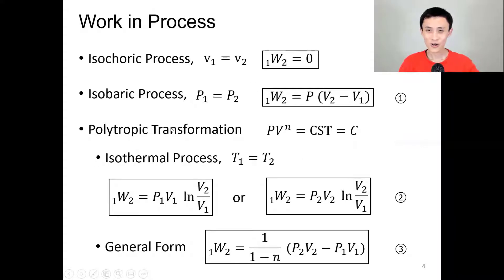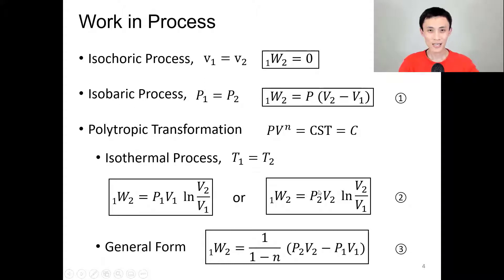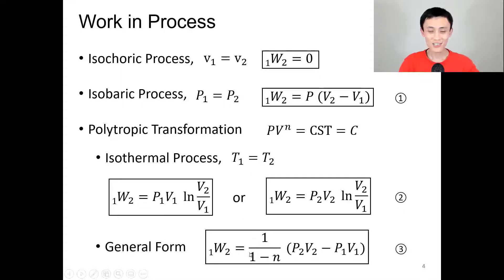Reviewing work in processes: if it's an isochoric process, then no work. An isobaric process means pressure is constant — this is formula number one to calculate work. If it's an isothermal process, you can use either formula — we denote those as number two. If it's a general polytropic transformation, this is the formula, and we denote it as number three.